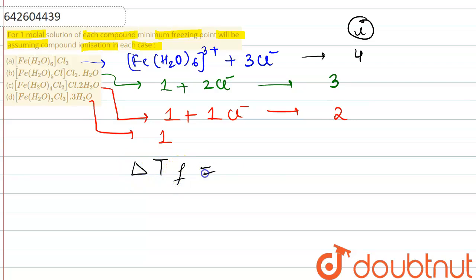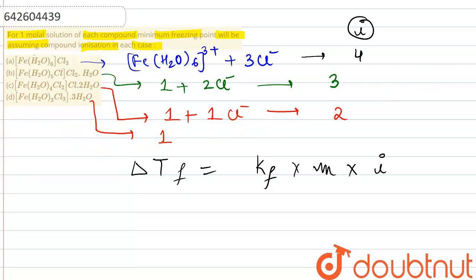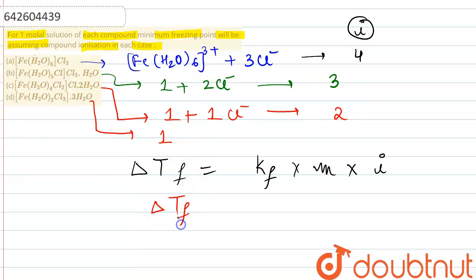The expression for depression in freezing point is ΔTf = Kf × m × i. Since molality is the same (one molar) for every solution and Kf is also the same, the minimum freezing point will occur where the depression in freezing point ΔTf is maximum. Therefore, ΔTf is directly proportional to the van't Hoff factor i only.